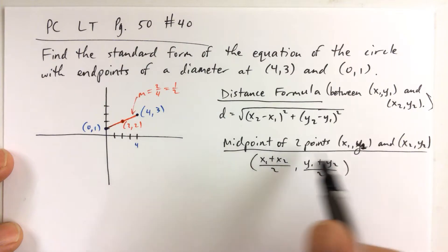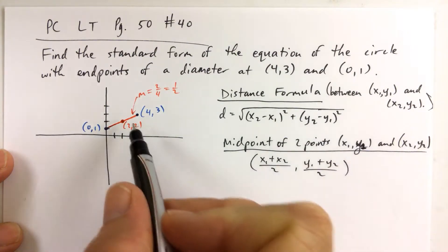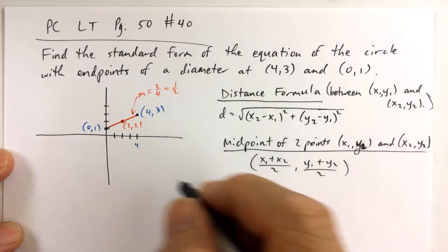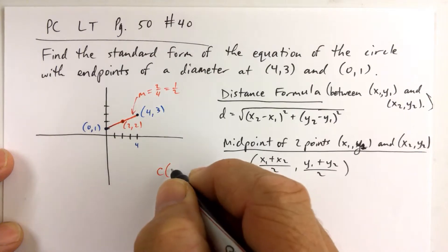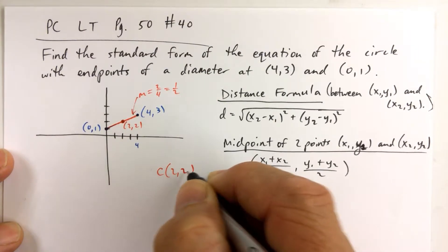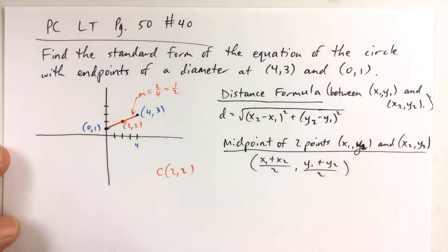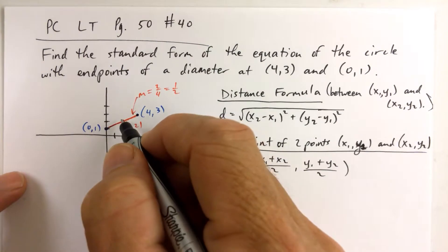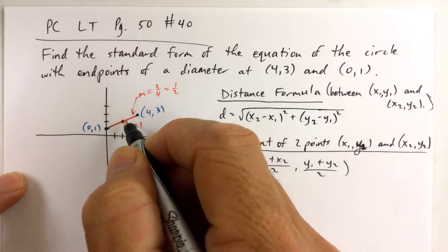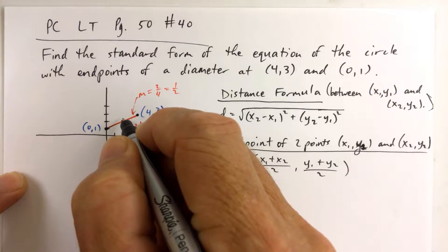I didn't have to use the midpoint formula to come up with the center of the circle. I actually just came up with the center of the circle just by observing what we were given. So the center of the circle is at (2,2). Now we still have to figure out how far is it from the center to one of the points, and that'll be the radius.